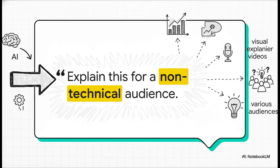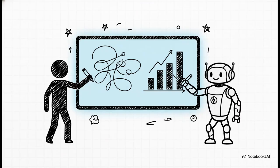The most powerful feature of all might be steering prompts. Instead of just taking whatever script the AI gives you, you can actually guide it — tell it to explain things for a non-technical audience, or focus only on the cost analysis section. This gives you incredibly precise control over the story. Steering prompts turn you from a passive user into an active collaborator with the AI. You're not just clicking a button and hoping for the best — you are actively shaping the narrative that it tells.